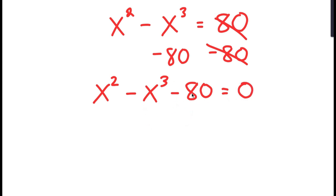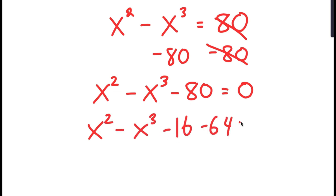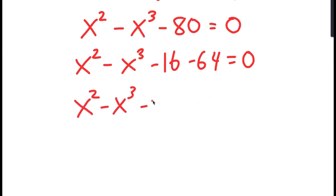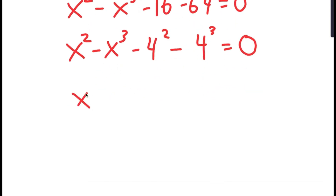From here, I'm going to replace negative 80 with negative 16 minus 64. I'm going to rewrite negative 16 as negative 4 squared and negative 64 as negative 4 to the power of 3. And I'm going to group x squared with negative 4 squared and x to the power of 3 with negative 4 to the power of 3.